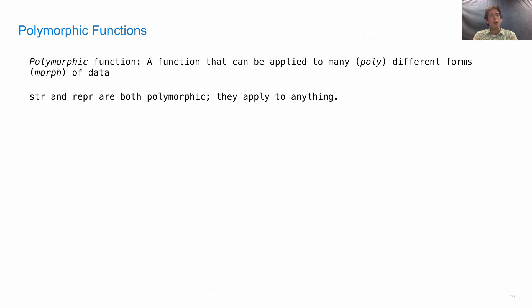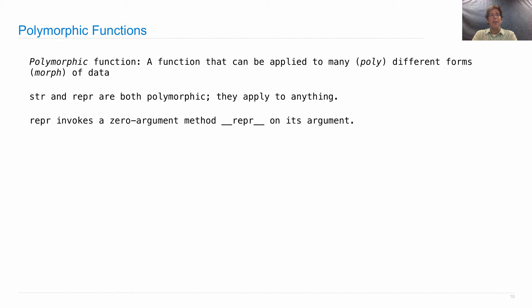So str and repr are both polymorphic. They apply to anything — you can pass in anything you want. Now how do they achieve this generic magic? Well, they just always invoke the same zero-argument method on their arguments.